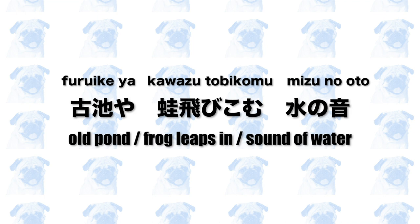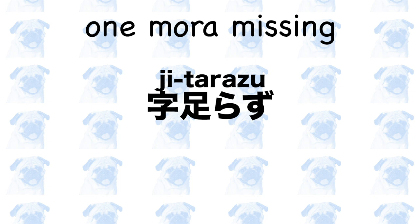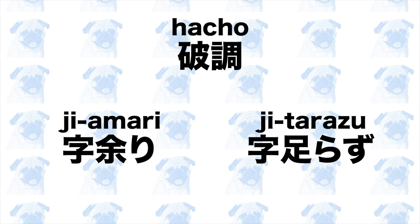Not all haiku adhere to this rhythmic pattern, however. For example, one of the three phrases in a haiku may have one extra mora — this is called jiamari, which literally means word remainder or word leftover. The opposite pattern also exists: one phrase may have one mora missing. This is referred to as jitarazu, or literally word lacking. Jiamari and jitarazu together are referred to as hachou, or broken meter, because they break the traditional rhythm of gohichigo.